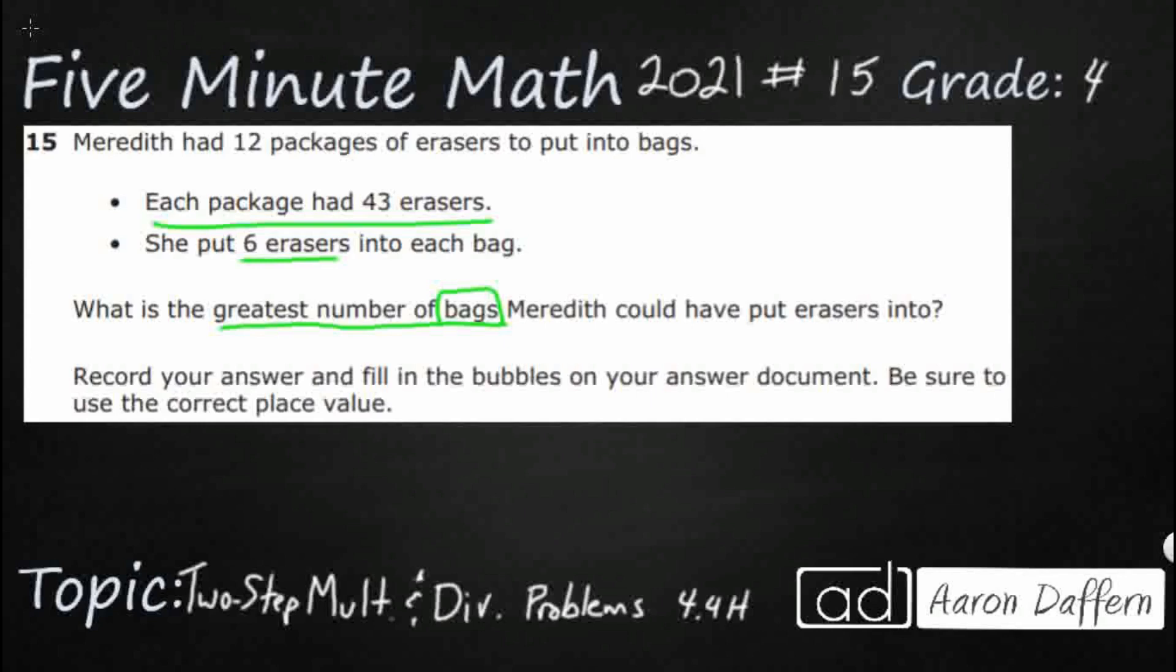So we've got 12 packages of erasers and each package had the same amount. So this lets me know I'm dealing with equal groups. Whenever we see anything that tells you equal groups, each group had the same number, the same number in each group, that lets you know equal groups is coming, which is our clue for either multiplication or division. So let's draw a strip diagram, see if we can figure out what we're doing here.